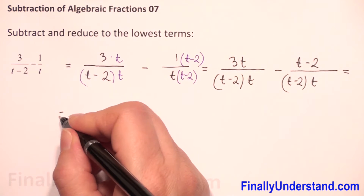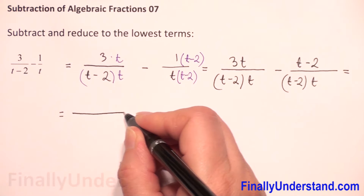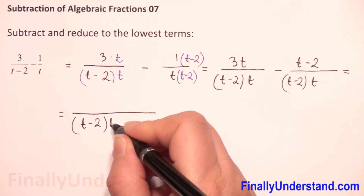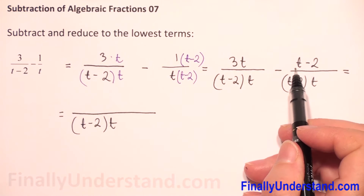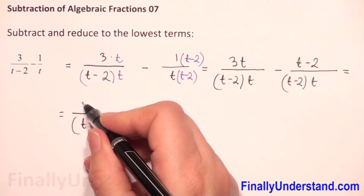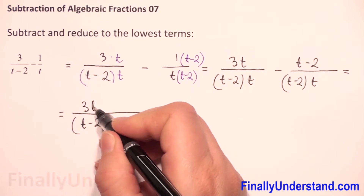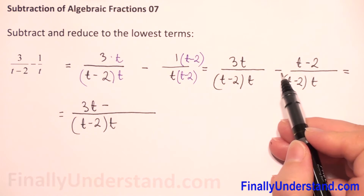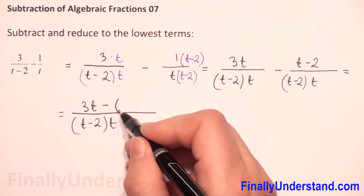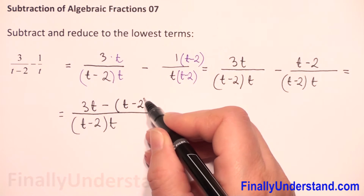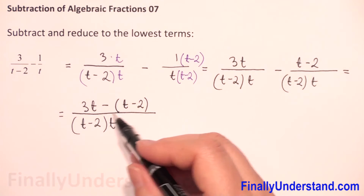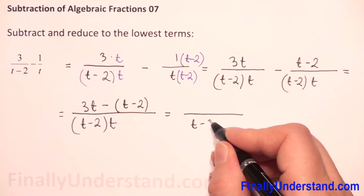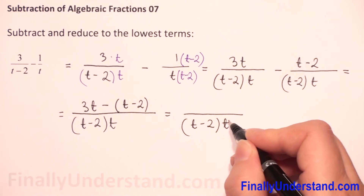Now when we have the same denominator, we copy the numerator and subtract. So we have 3t minus, and because before this whole expression we have a negative sign, I have to put it in parentheses because we need to change the signs. So it will be t minus 2 times t in the denominator.